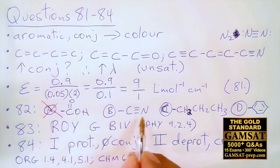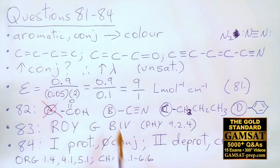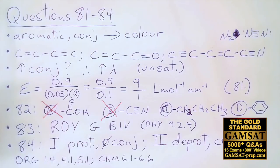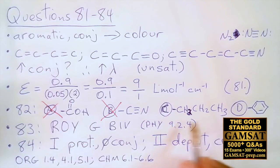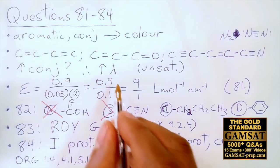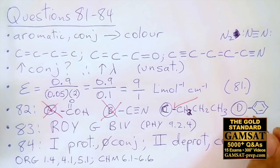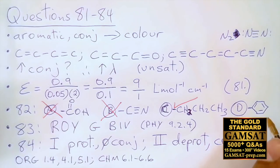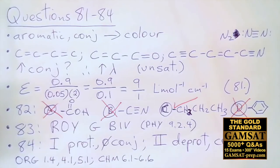Answer choice C is an alkyl group — an alkane minus a hydrogen, a saturated hydrocarbon, for example a propyl group. There are no double bonds and no triple bonds, so there is no way to increase conjugation or increase the wavelength. Answer choice C is correct. Answer choice D shows an aryl group, meaning an aromatic hydrocarbon such as a benzene ring as an attachment, which is clearly conjugated and would increase the wavelength.